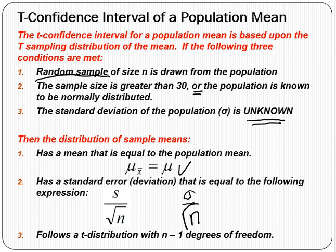If those conditions are met, the distribution follows what's called a t-distribution. A t-distribution is nearly normal, but not quite. The t-distribution varies according to the sample size. The particular t-distribution we use has degrees of freedom equal to the sample size minus one.